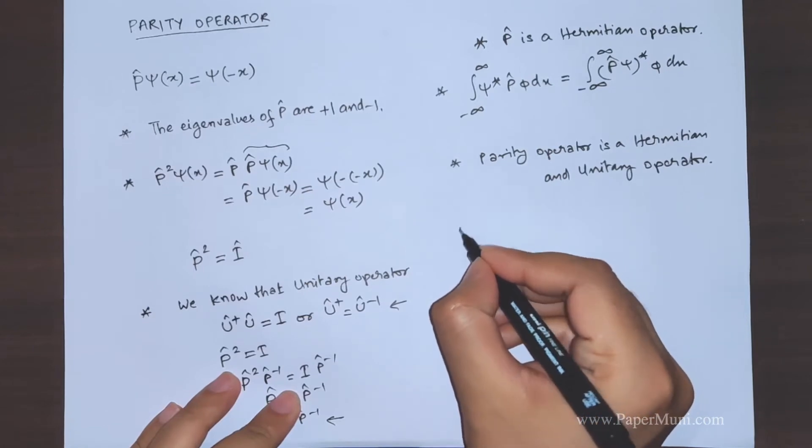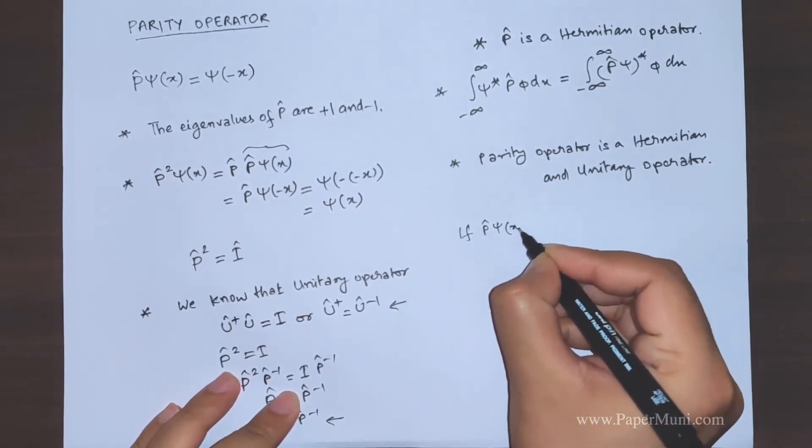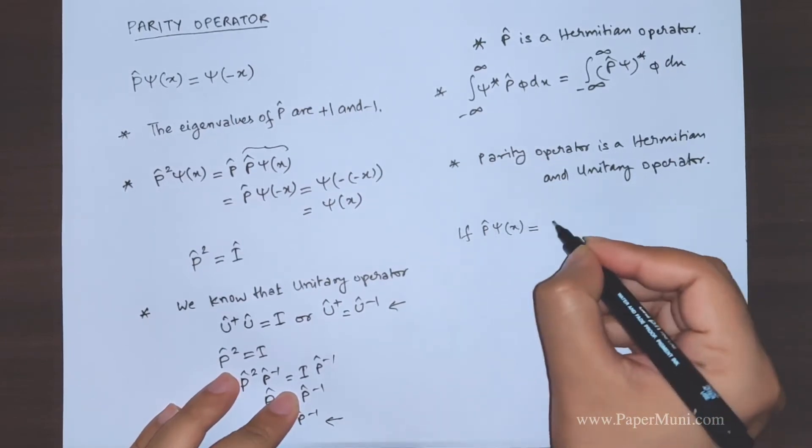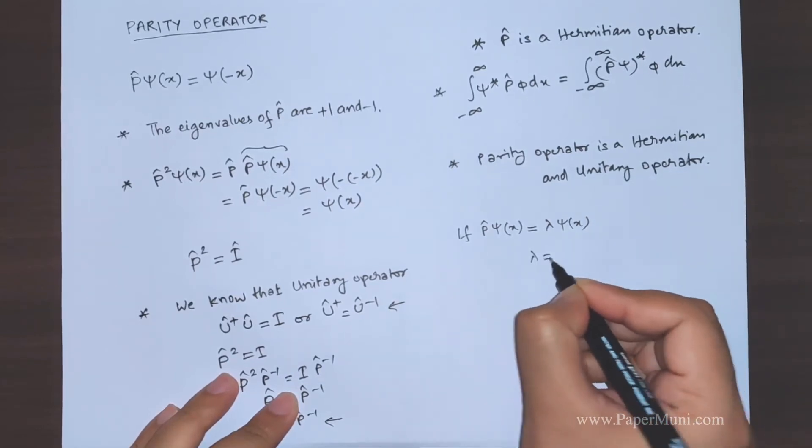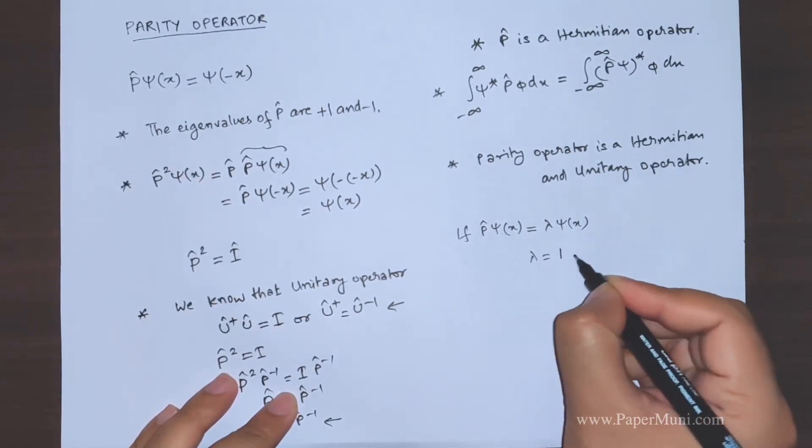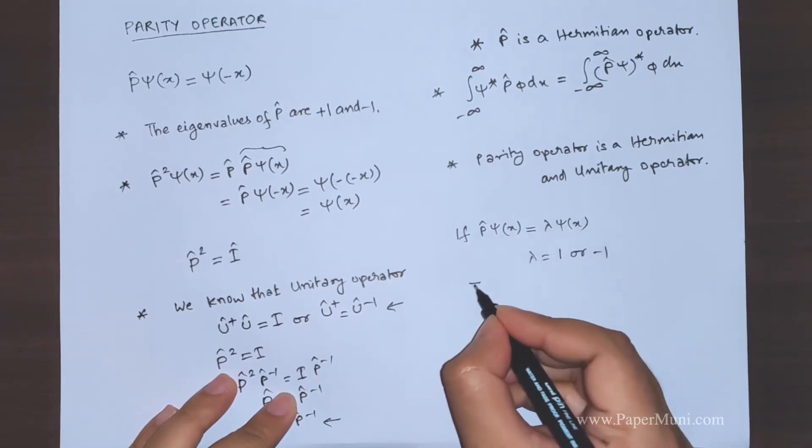If parity operator operating on ψ(x) gives you λψ(x), where λ is equal to plus one or minus one, then we say that ψ has definite parity.